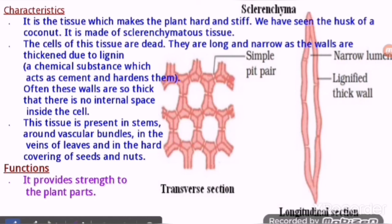This was the discussion of the different types of simple permanent tissues. In the next video, we will discuss complex permanent tissues — xylem and phloem. Please like and subscribe to this video. Thank you.